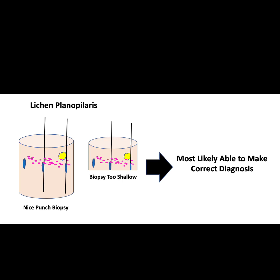Let's take a look at diagnosing lichen planopilaris, which is a scarring alopecia. In this cartoon on the left, we have two hair follicles. You'll notice the sebaceous glands are reduced — just one yellow dot on the left side — which is a very classical histological finding in scarring alopecias. In lichen planopilaris, the inflammation is in the upper part of the hair follicle, shown with purple-pink dots representing lymphocytic inflammation consisting largely of lymphocytes, as well as plasma cells and other inflammatory cells.